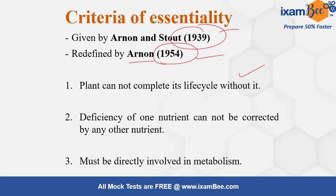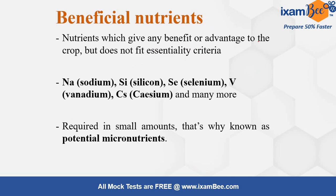Arnon also said that the deficiency of one nutrient cannot be corrected by adding any other nutrient in the soil — that was the second criterion. For the third, nutrients must be directly involved in metabolism. There are certain nutrients which are not essential but can be said as beneficial. These nutrients give certain added advantages and do not fit into the essentiality criteria given by Arnon and Stout.